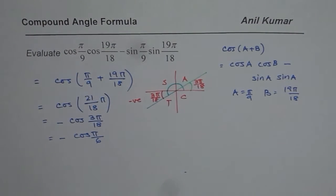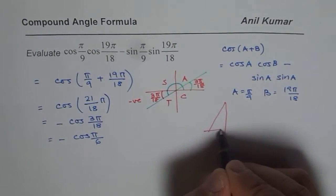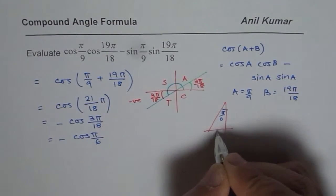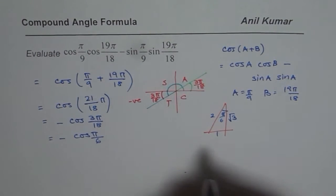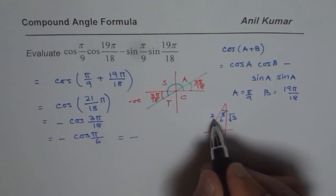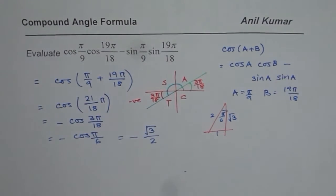To find cos of π/6, you can use special triangle. So that is your special triangle. This is π/6 for you. 1, 2, square root 3. So cos of π/6 is square root 3 over 2. So we get negative square root 3 over 2 as your answer.